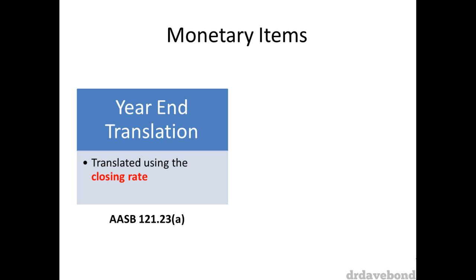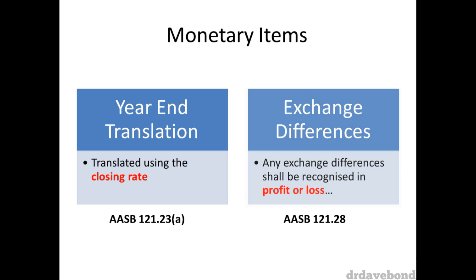Accounting for monetary items: if there are foreign currency monetary items on the books at the end of the financial year, these are translated using the closing rate, i.e. the spot exchange rate at the end of the reporting period. Any exchange differences shall be recognised in profit or loss.